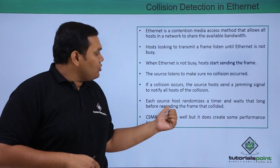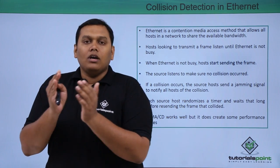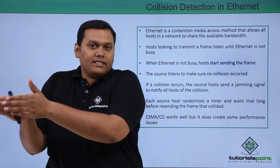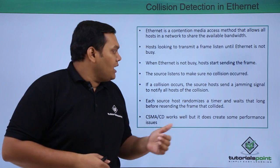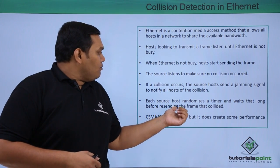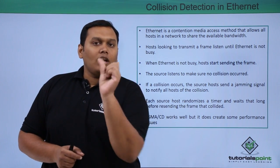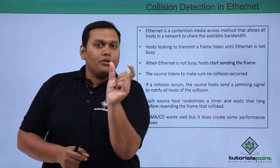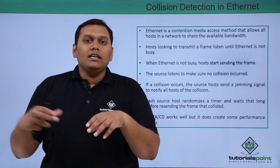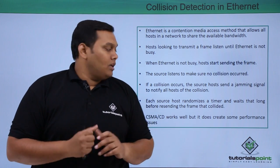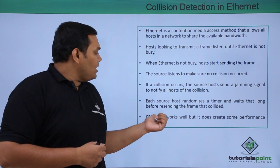Each source host randomizes a timer — similar to the 24-hour or 12-hour example from the road accident analogy. A timer is initialized or randomized and the host waits that long before resending the frame that collided. Within this timer period, everything should be restored to its position so that data can again be sent through the Ethernet cable. This is called Carrier Sense Multiple Access Collision Detection (CSMA/CD).